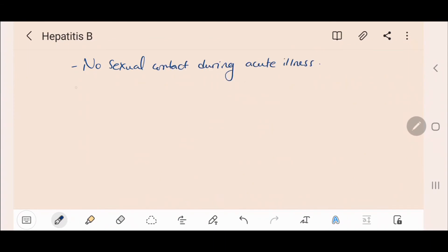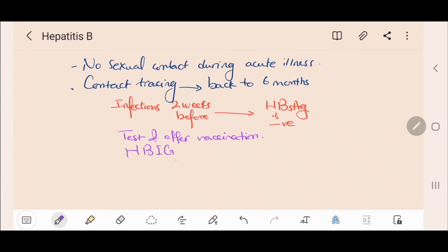The infectivity period of Hepatitis B is between two weeks before the onset of symptoms and until the Hepatitis B surface antigen is negative. We should also consider testing sexual contacts, household contacts and close family members and vaccinate if not immune.